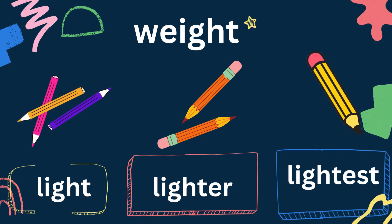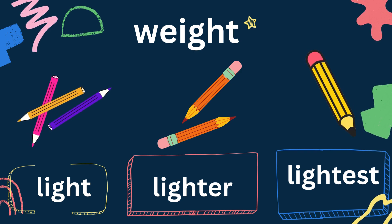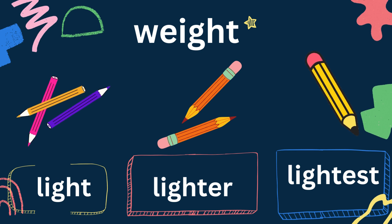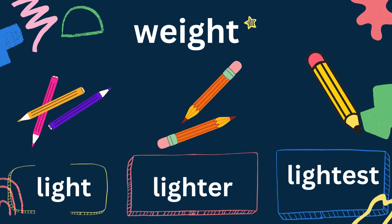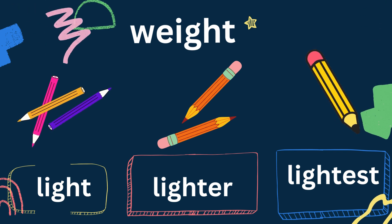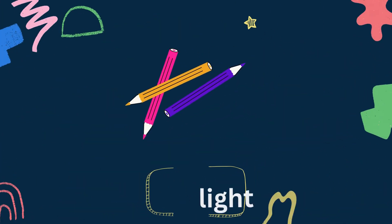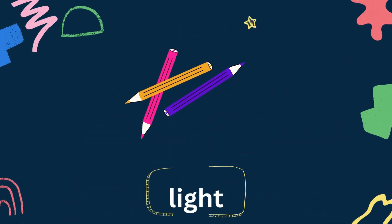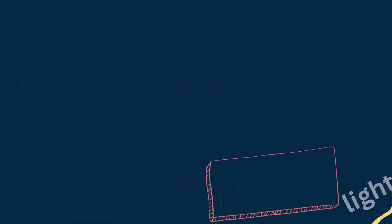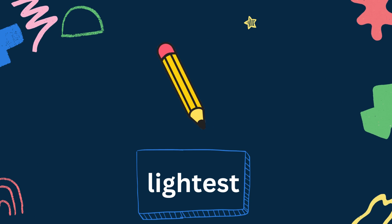Now, according to weight — light, lighter, lightest. Lightest is the most lightweight thing. Three pencils are light, two pencils are lighter, and one pencil is lightest among all.